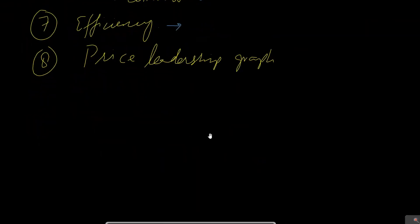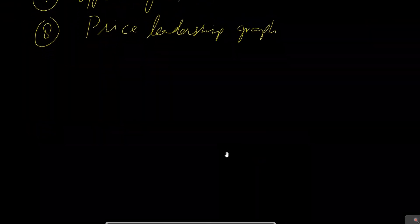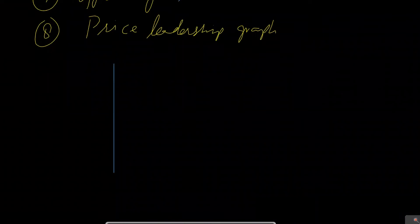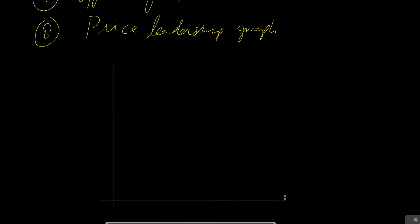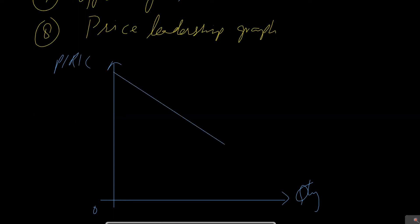Price leadership is again a prominent feature of this market structure. Price leadership is a phenomenon in which one firm is in a position to change the price, and if it reduces its price, all other firms will follow it. The firm which has the lowest market price is basically known as the price leader. We can show this with a graph where on the y-axis we have price, revenue, and cost, and on the x-axis we have output or quantity. We can draw a common average revenue curve.